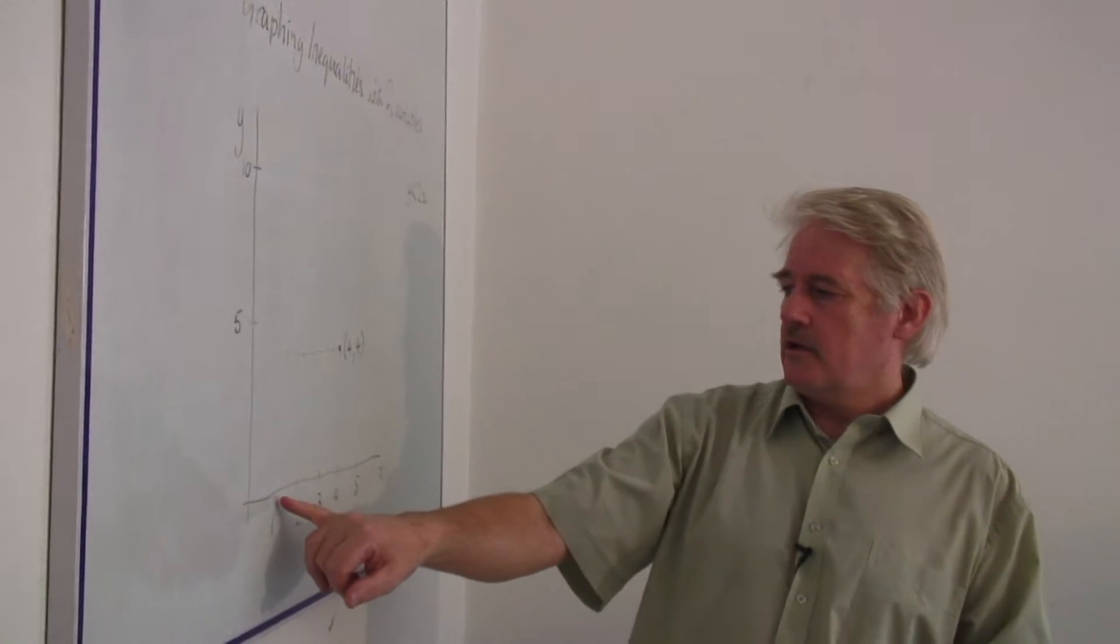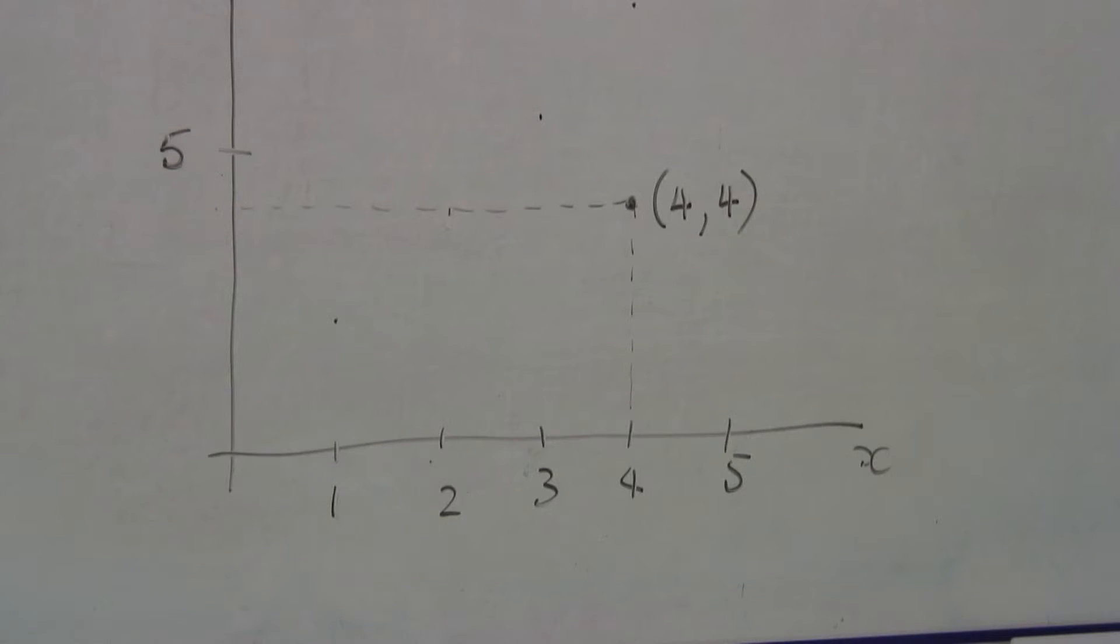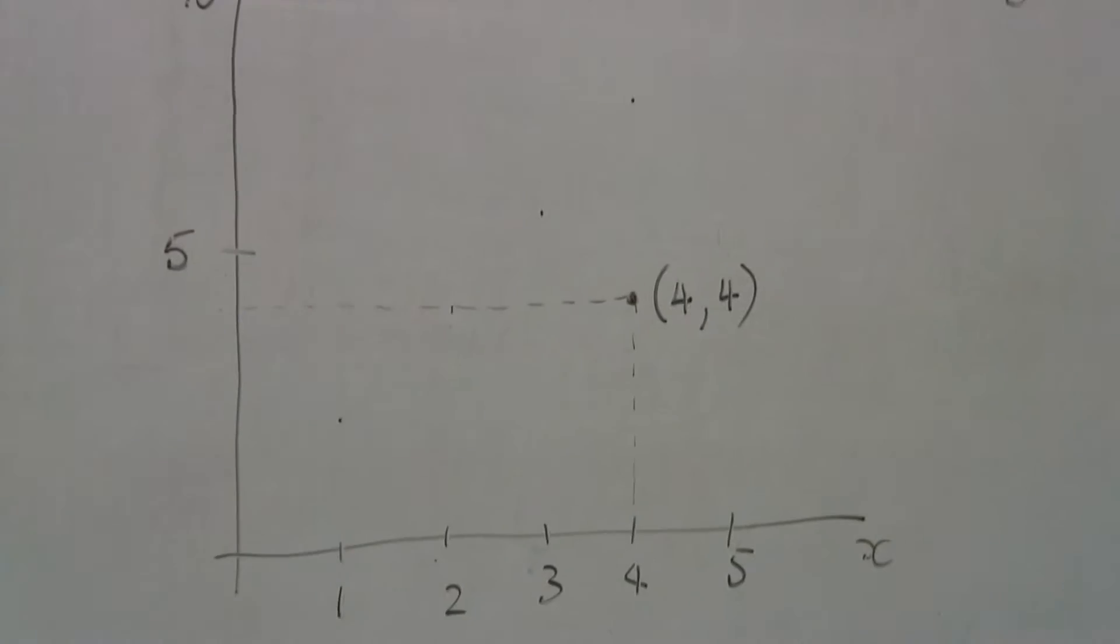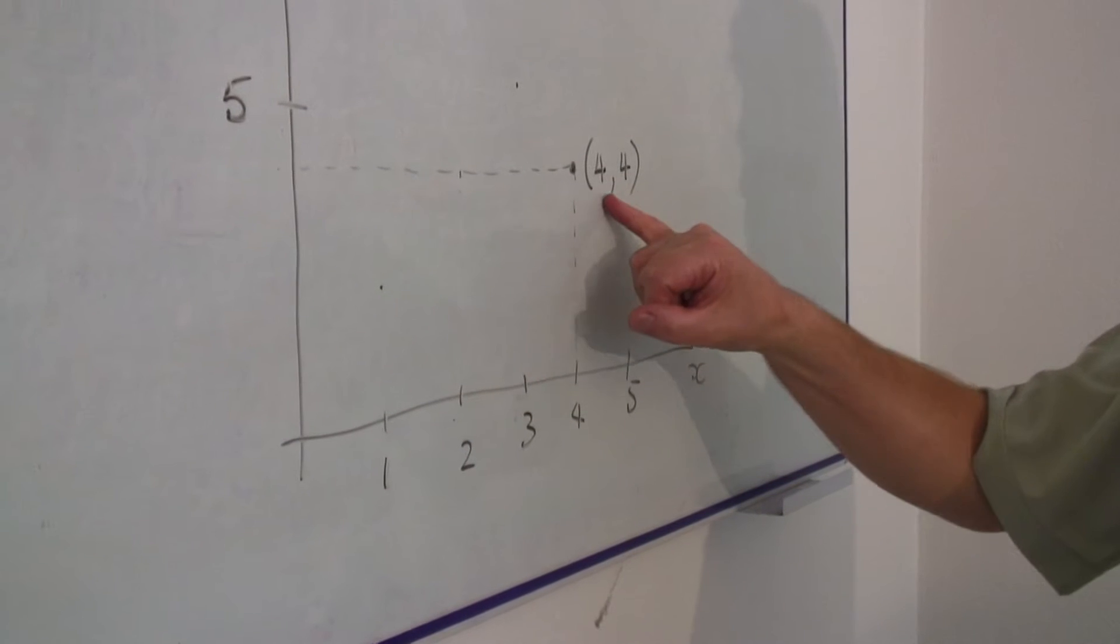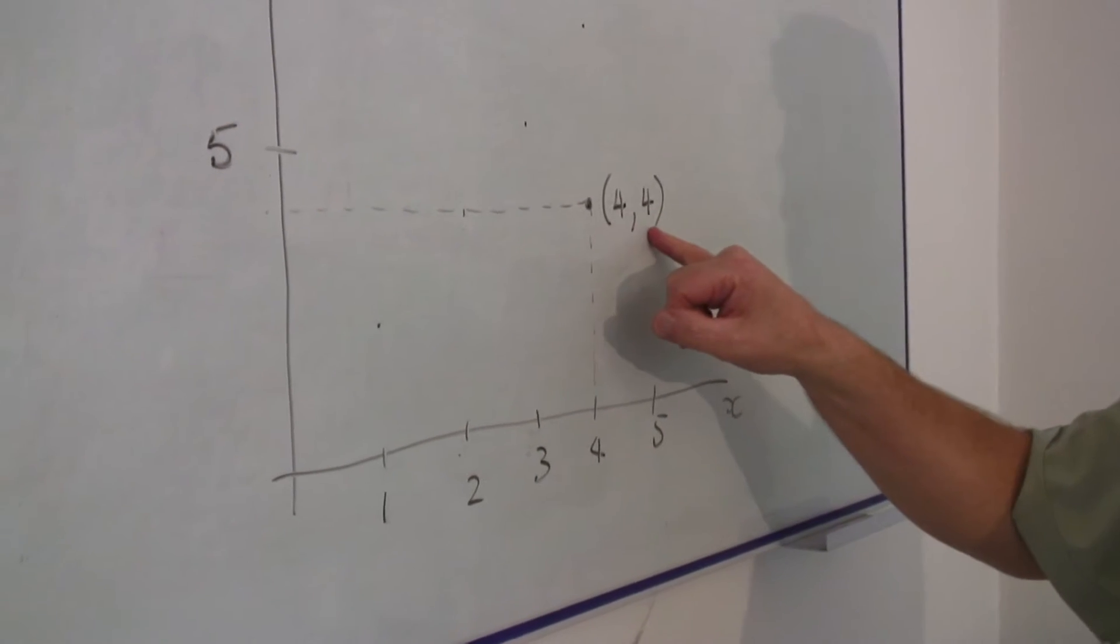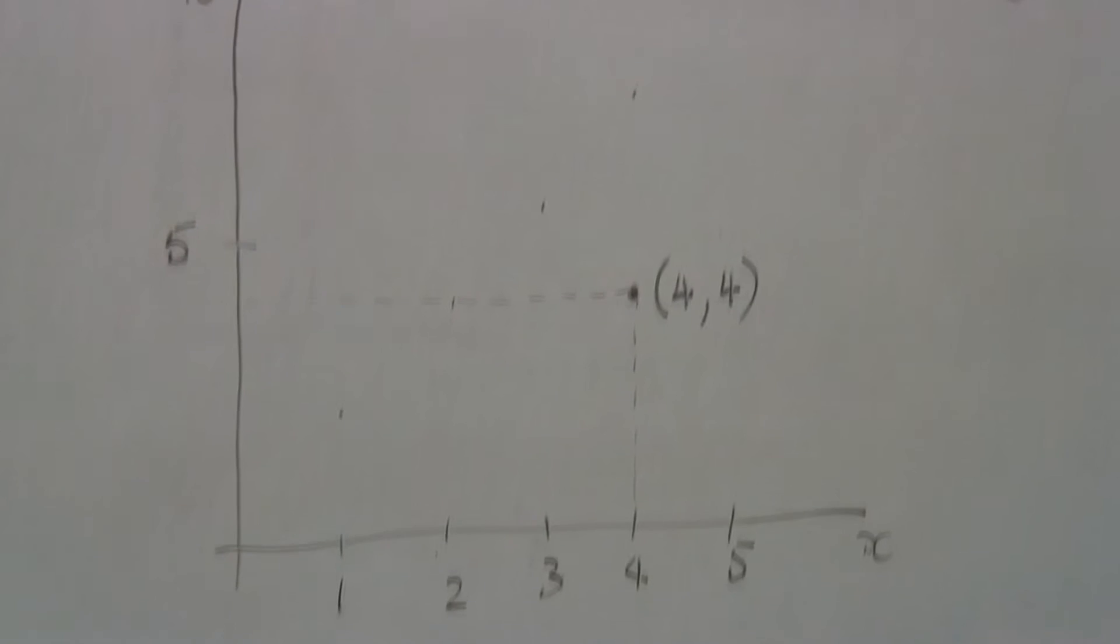On x you can see it goes one, two, three, four, five, and y goes five, ten. Right, and I've plotted on this a point four, four. That's x is four, y is four. So that is in preparation.